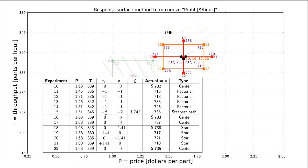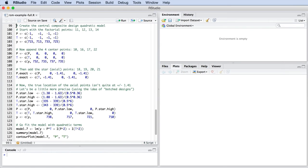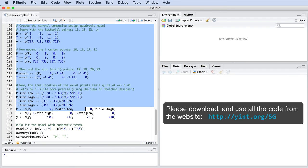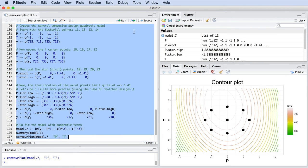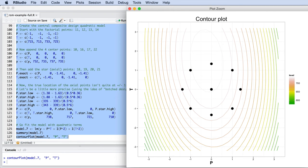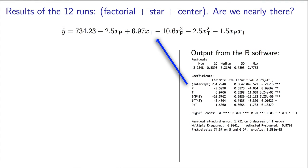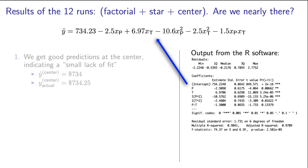Well, we've got quite the collection of data here. A central composite design always has the factorial points, centre points, and star points, and I've arranged them in that order in the R code. When we run that code, we get the quadratic model from them all. I will leave it as a small challenge to you to go prove the following two things. Firstly, the model's prediction of the centre point, when compared to the average of the four centre points, has a very small deviation. So this model fits well, at least at the centre.